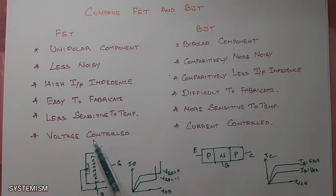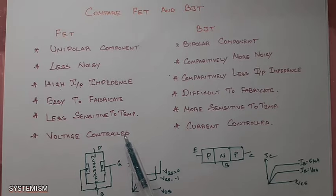Next main difference is this is a voltage control device, but BJT is a current control device. What is mean by voltage control device? See in the output characteristics, output current depends upon what? Depends upon input voltage.